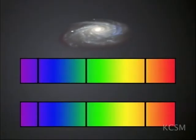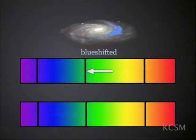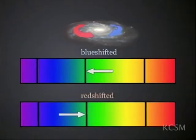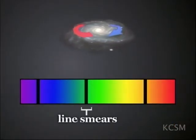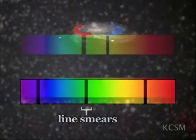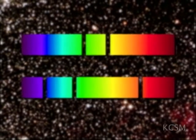An object that is rotating exhibits yet another effect. As it spins, one part is moving toward the observer while another part of that same object is moving away. A single spectral line will get both red-shifted and blue-shifted, which will broaden it — smearing it out in wavelength. If that absorption line is smeared out, you know that that star must be rapidly spinning.